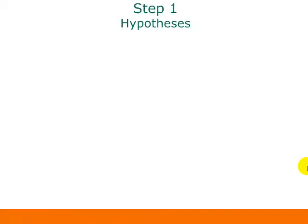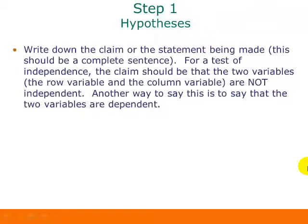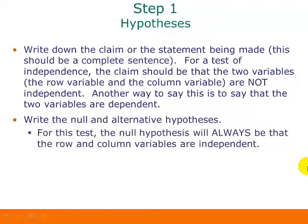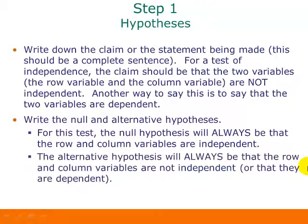When we're doing the hypothesis test, step one is writing the hypotheses. For a test of independence, we write the claim to be that the two variables — the row variable and the column variable — are not independent; another way to say this is that they are dependent or related. The null hypothesis is always that the row and column variables are independent, and the alternative hypothesis is always that the row and column variables are not independent, or that they are dependent.